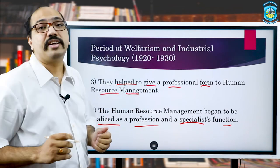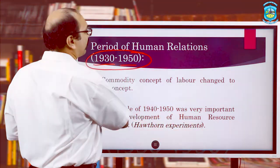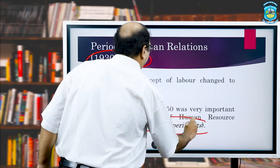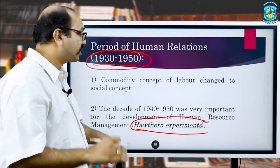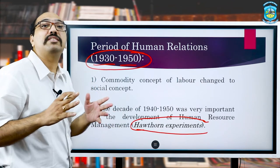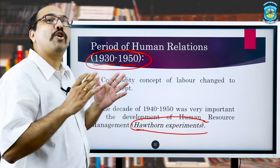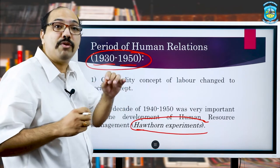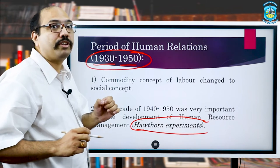The next two decades, 1930 to 1950, are very important. As highlighted in the previous lecture, Hawthorne experiments were conducted in this period. Professor Elton Mayo from Harvard University conducted a number of experiments which ultimately resulted in the recognition of HRM as a science of people. For the very first time in management, which was dominated by engineering thought, people recognized the value of human motivation — which in my view was the turning point for the evolution of human resource management.